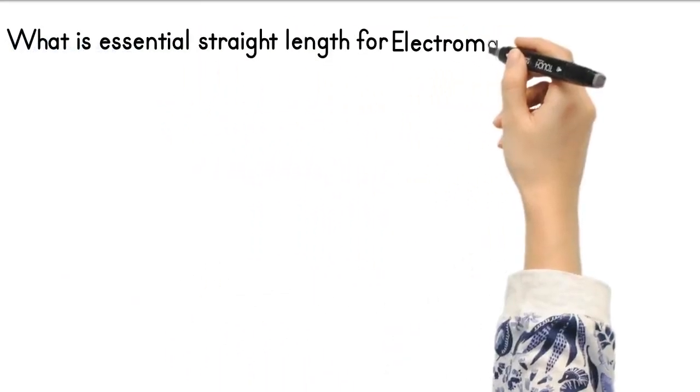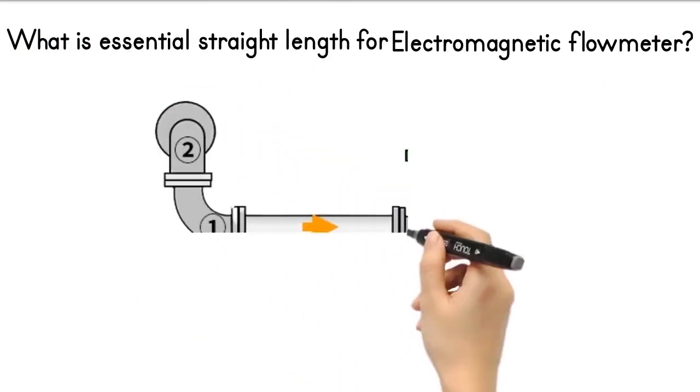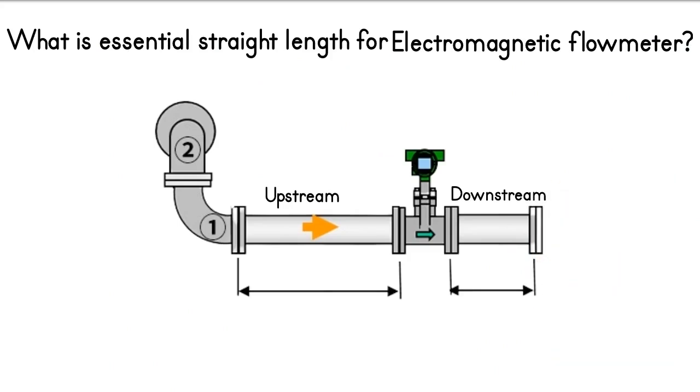What is the essential straight length in upstream and downstream if you are installing an electromagnetic flow meter? If you are installing an electromagnetic flow meter, a minimum 5D in upstream and minimum 3D in downstream straight run is required. By maintaining straight length in the flow meter's upstream and downstream, flow turbulence is minimized and maximum accuracy can be achieved.